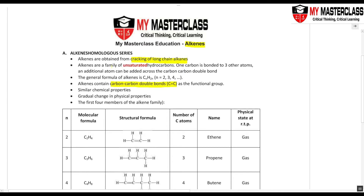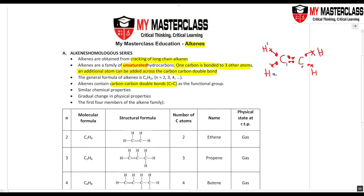Alkenes with the carbon-carbon double bond are what we call unsaturated hydrocarbons. It is unsaturated because one carbon atom is bonded to only three other atoms, meaning an additional atom can be added to the double bond. If you draw it using a dot-and-cross diagram, carbon has four outer electrons — one, two, three, four — and this carbon is bonded to one, two, and three other atoms. This is what we mean by unsaturated.